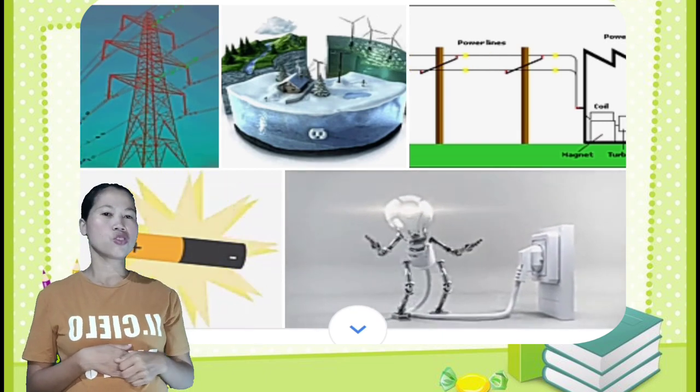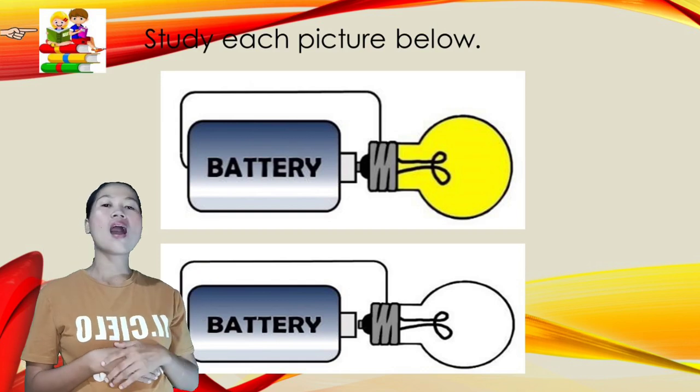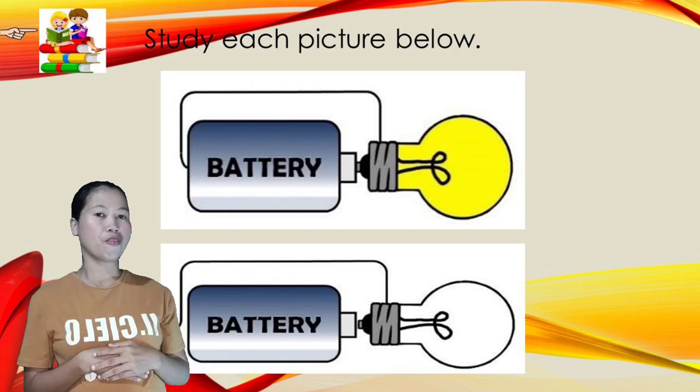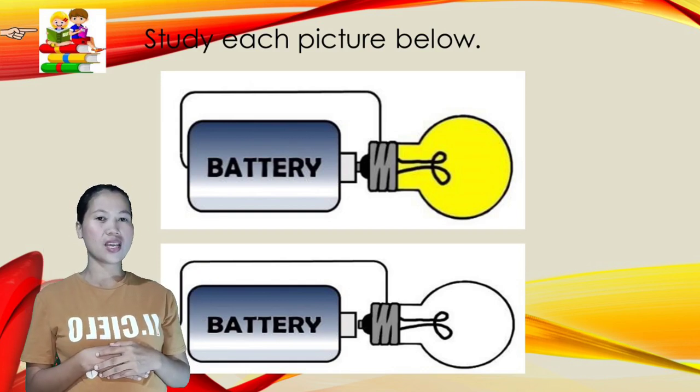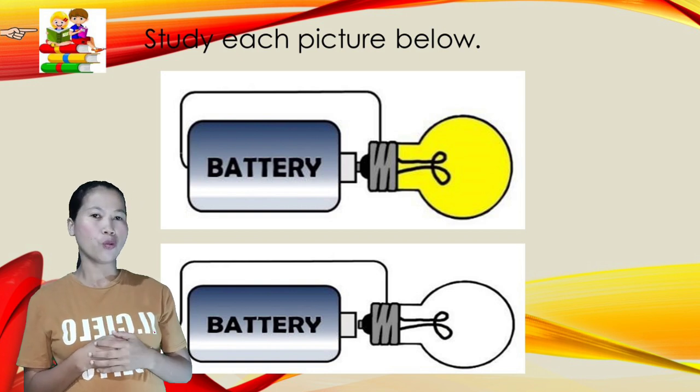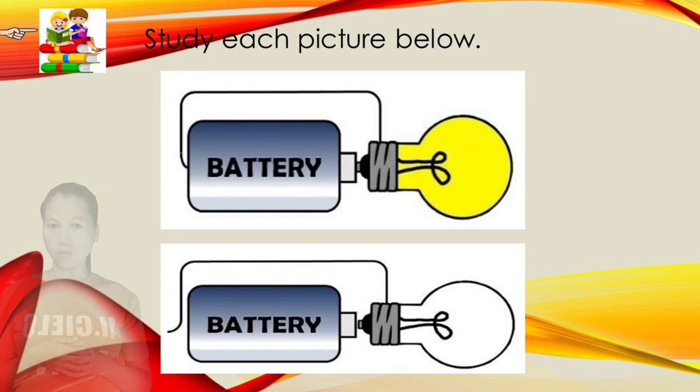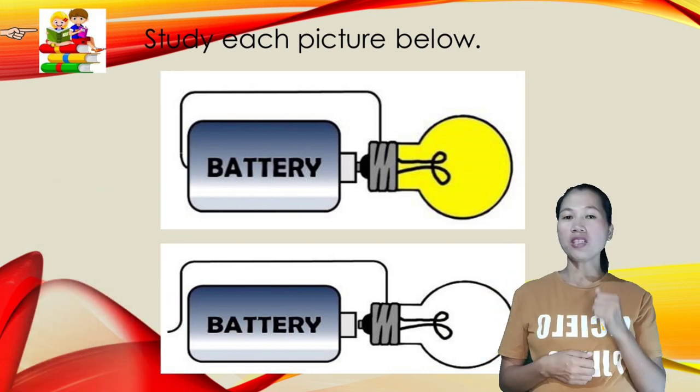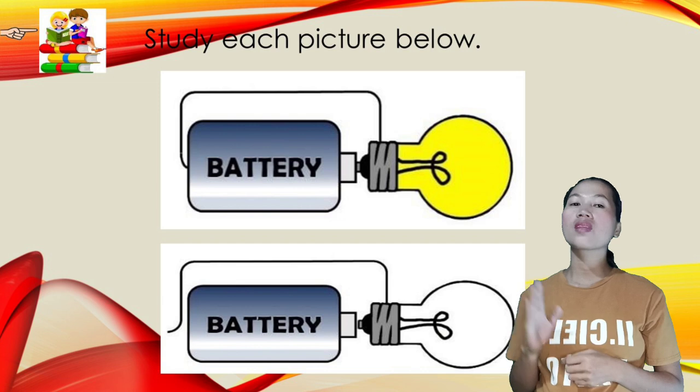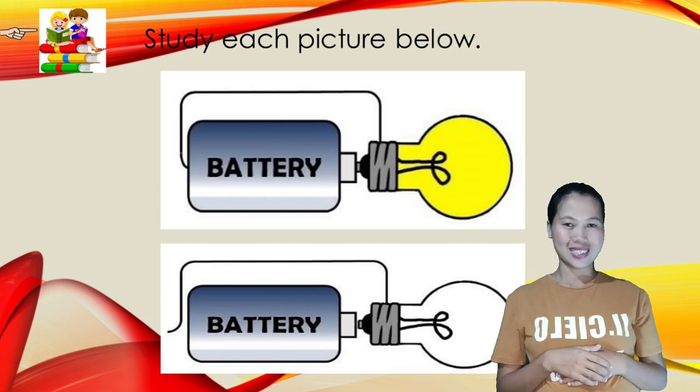Study each picture. How do they differ from each other? Is there a gap on wire? Or is there a complete path on connection of the bulb? The picture shows an electrical circuit.